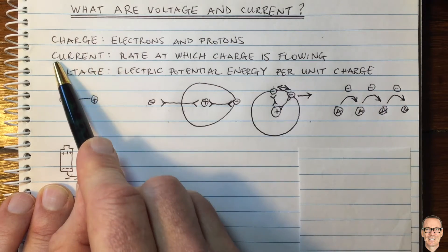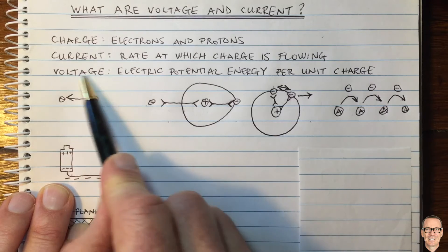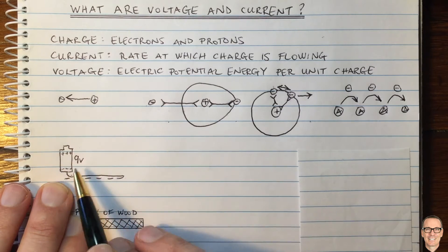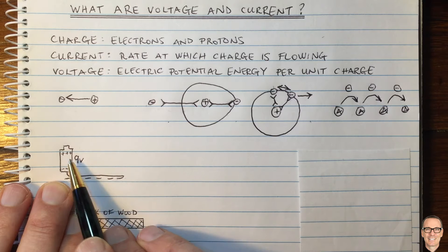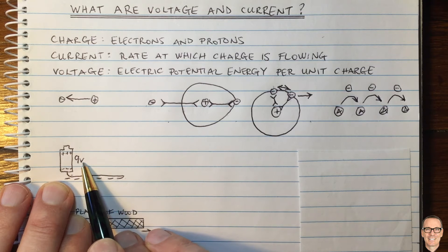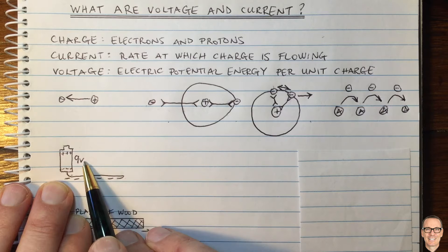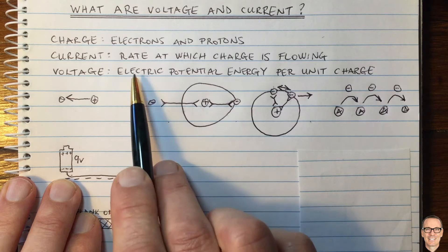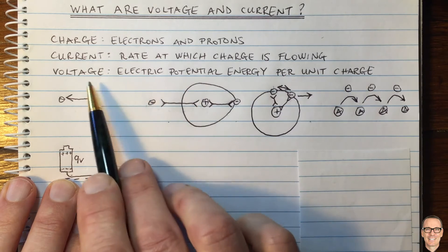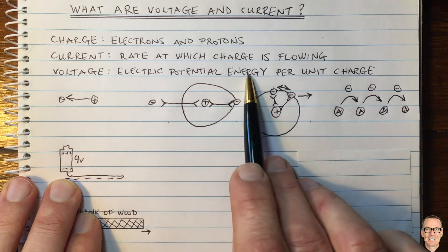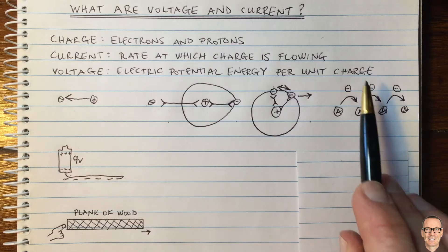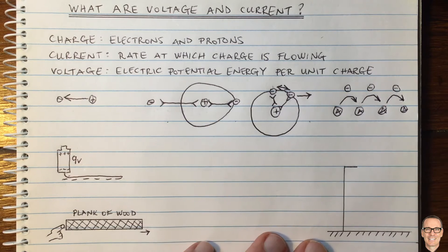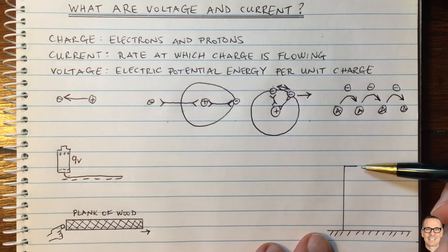Now that we understand how charge moves from one atom to another, let's think about what it means for current and what voltage is. Let's come back to our battery and think about what we mean when we say a battery has, for example, nine volts. Voltage is the electric potential energy per unit charge. For this, I like to think of an analogy of gravitational potential energy.